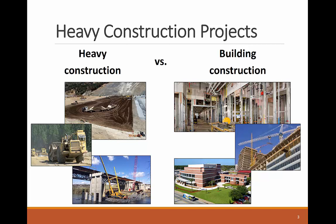Third, as you can see from the photos, heavy projects have fewer trades and specialty work packages compared to building projects. Looking at the interior building photo during construction, you can see electrical, plumbing, mechanical, fire sprinkler, concrete, drywall studs, and other systems. On the other hand, heavy construction projects have a lot of dirt and soil to move, and large structures made of steel and concrete. There are a few cases of heavy projects that include mechanical, electrical, and plumbing systems, such as water and energy plants.